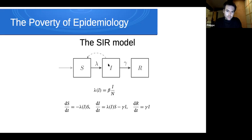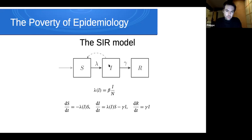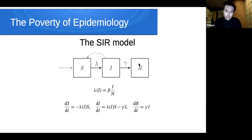The third class is recovered people — those who were infected but have recovered and can no longer be infected because they are now immune, so they're no longer susceptible, and they also can't infect people because they're no longer infectious. In this model, immunity doesn't wane, which means that when you're in the recovered compartment, you don't go back to the susceptible compartment — you're there once and for all.